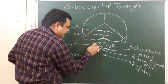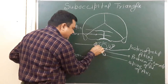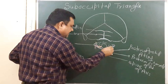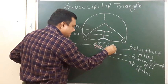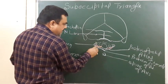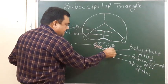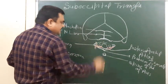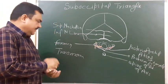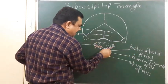This artery passes here — this is the third part of the vertebral artery. The lower part is the second part; the third part lies here in this region. This is the fourth part, which winds around the posterior arch of the atlas.